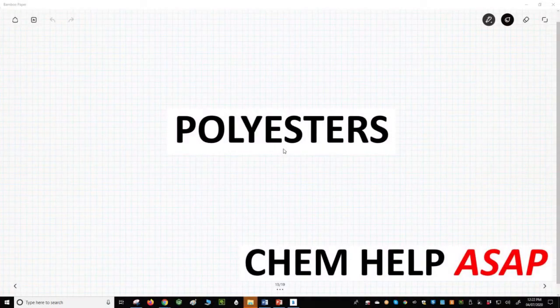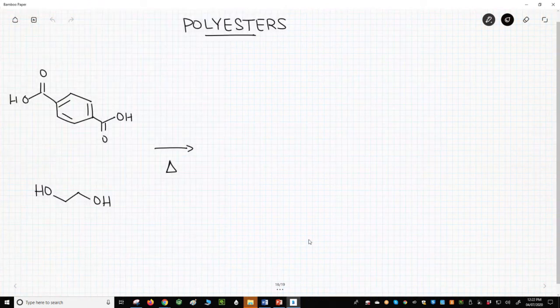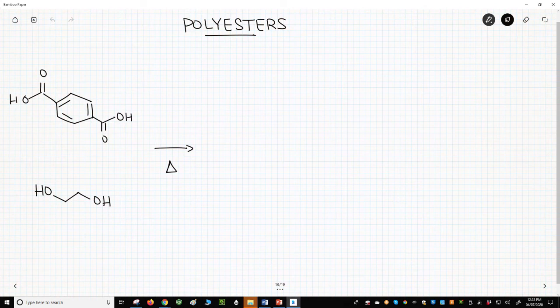Good day from Chem Help ASAP. Let's learn about the most common polyester. Polyesters are a condensation polymer. They are made from a diacid and a dialcohol.